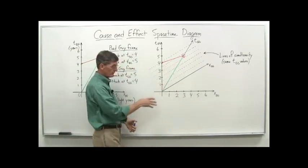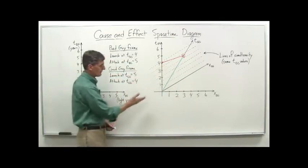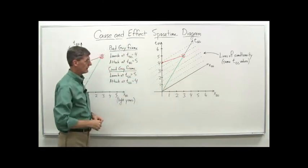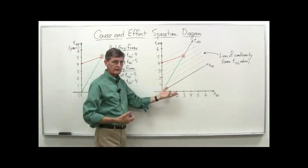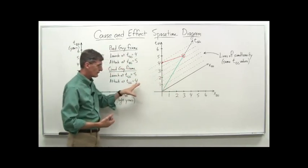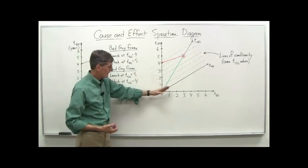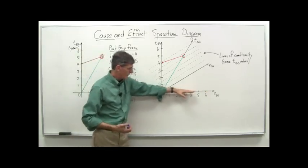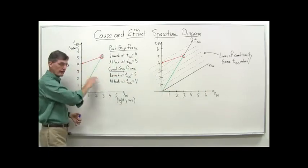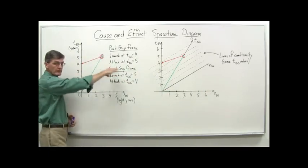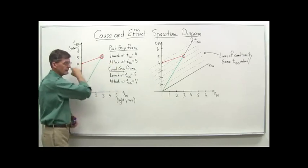The speed of light in these units, with light years and years, speed of light would be a 45-degree line there. And so what do we see from this? Well, remember the lines of simultaneity in any frame of reference are going to be parallel to the x-axis. The x-axis defines everything that occurs at a certain time. Or any given horizontal line on the bad guy diagram, any given horizontal line defines a line of simultaneity. Everything that's going on, say, at t equals 4 is on this line.